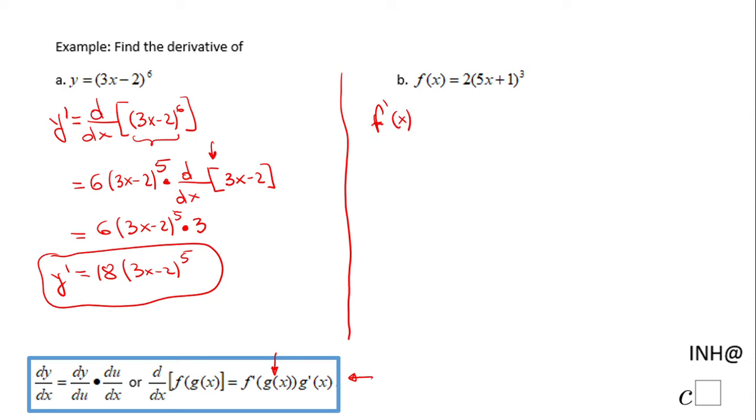So f'(x), in this case, or the derivative of f(x) with respect to x, will be the derivative with respect to x of 2 times the quantity (5x + 1) to the third power. So in this case, what you can do right away is you can take this 2 and move it up front using the constant multiple rule.